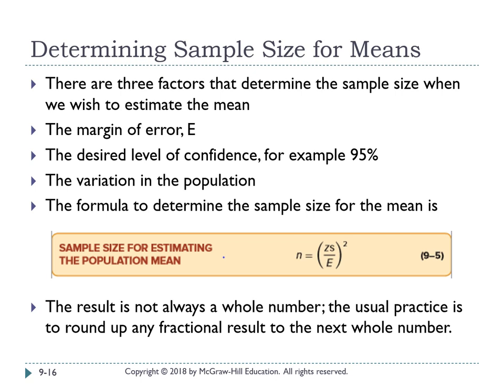The second part of the chapter focuses on sample size. Three factors determine sample size for estimating the mean. First, the margin of error (e): the smaller the error we can tolerate, the larger the sample needed. Second, the desired level of confidence (e.g., 95%): larger sample size leads to more accurate estimation. Third, the variation in the population: if the population is widely dispersed, a larger sample is required for good estimation.